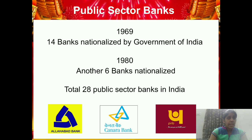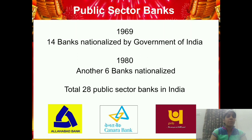In 1969, 14 banks were nationalized by the government of India, then in 1980 another 6 more came, making 28 public sector banks in India today. Examples include Canara Bank, Allahabad Bank, and Punjab National Bank — all managed and owned by the government.